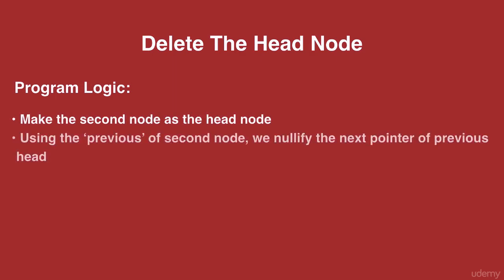Let's take a look at the program logic. We make the second node as the head node. Then using the previous of the second node, we nullify the next pointer of the previous head.